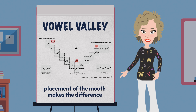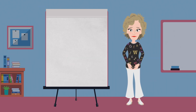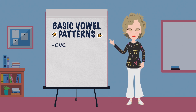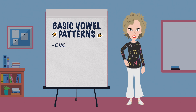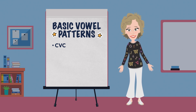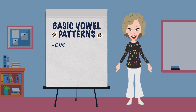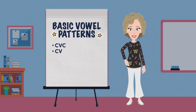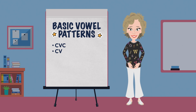The last big idea discussed in our study of vowel sound production was the six basic vowel patterns. The CVC pattern is very common, especially in words encountered in the lower elementary grades — the vowel is generally squished in the middle of two consonants, creating a short vowel sound. The open or CV pattern is where the vowel is at the end of the word, so it is free to say its name as a long sound.